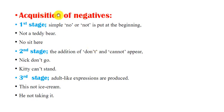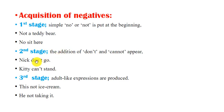For the acquisition of negatives: Stage 1 — simple 'no' or 'not' is placed at the beginning, e.g., 'not a teddy bear,' 'no sit here.' Stage 2 — 'don't' and 'can't' appear in children's language, e.g., 'Nick don't go,' 'kitty can't stay.' Stage 3 — adult-like negative expressions are produced, e.g., 'this not ice cream,' 'he not taking it.'